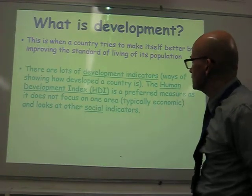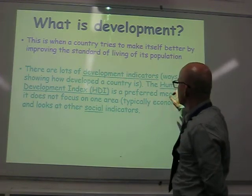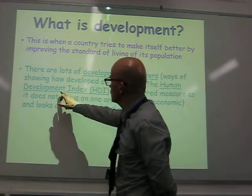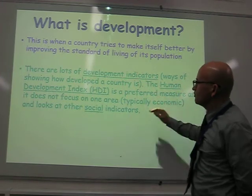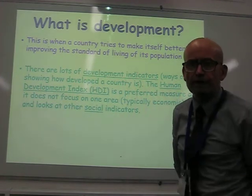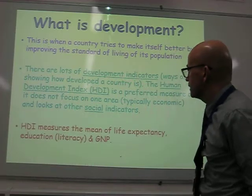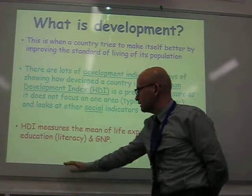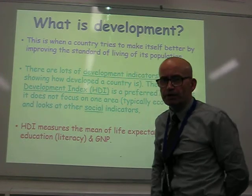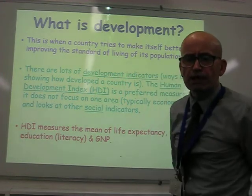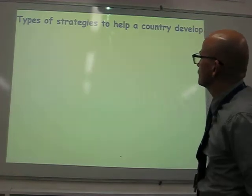We can measure this using something called development indicators, of which the most famous one is the Human Development Index. The HDI is a preferred measure because it looks at social factors — it doesn't just look at how wealthy a country is. It measures life expectancy, education (typically adult literacy), and GNP. Google GNP, discover what that means and how that's useful to geographers.